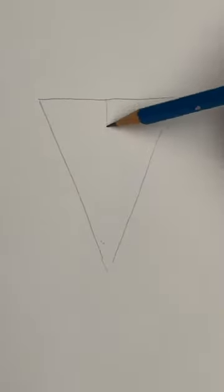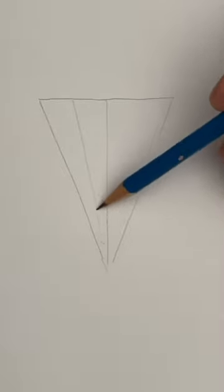Let's draw an elephant. We're going to start with a triangle. Draw a line down the middle and cut those triangles in half too.